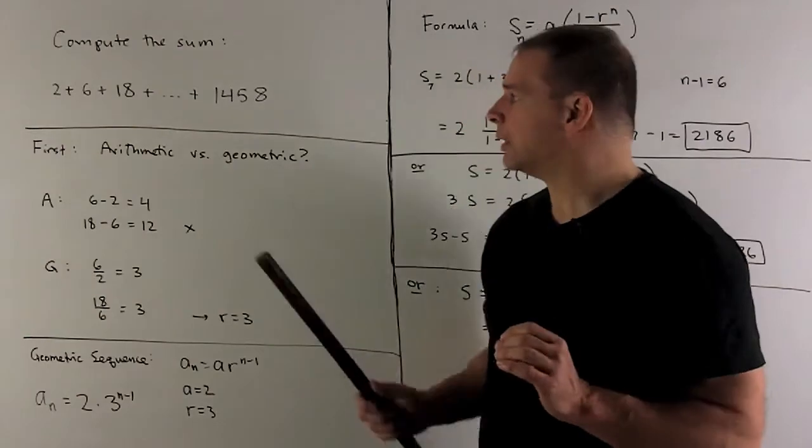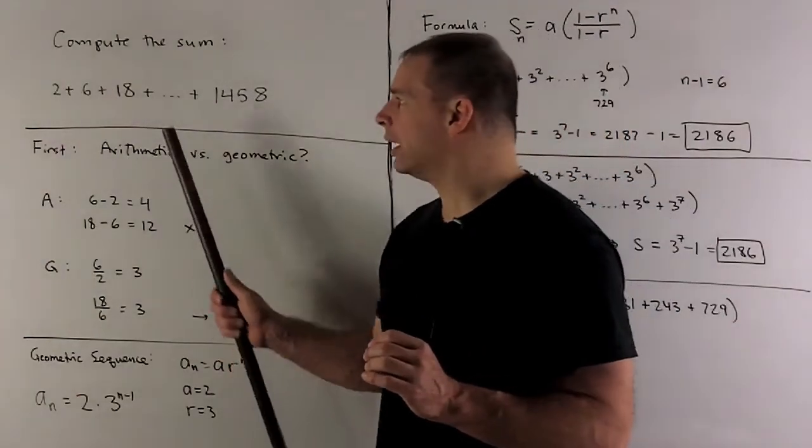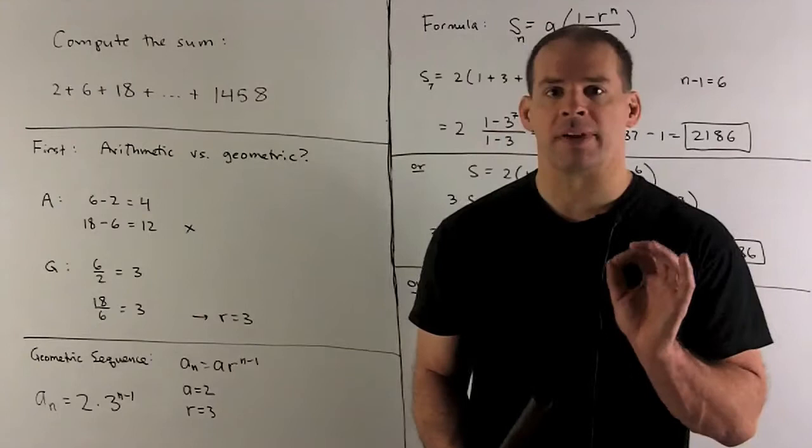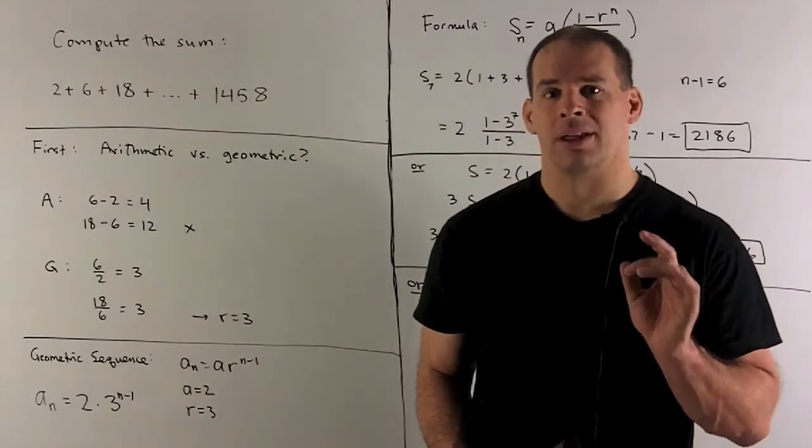If we check a few, 6 minus 2 gives me 4, 18 minus 6 gives me 12. So we don't have a common difference, so we're not arithmetic.